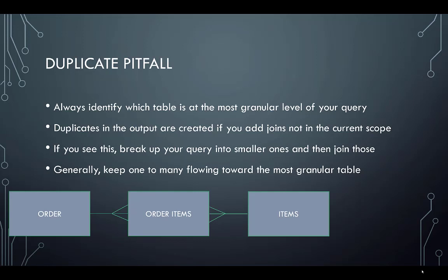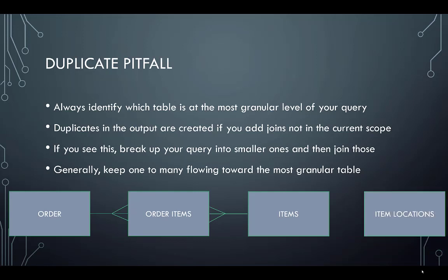However, if we wanted to include something else — like item locations to show where an item is stored — and warehouse A and warehouse B both have the item, joining it the wrong way will create duplicate order item rows for every item location. Typically, what we want to do is package up the order items in one query, then take the item locations and narrow down to a single row for each, and join that back in.